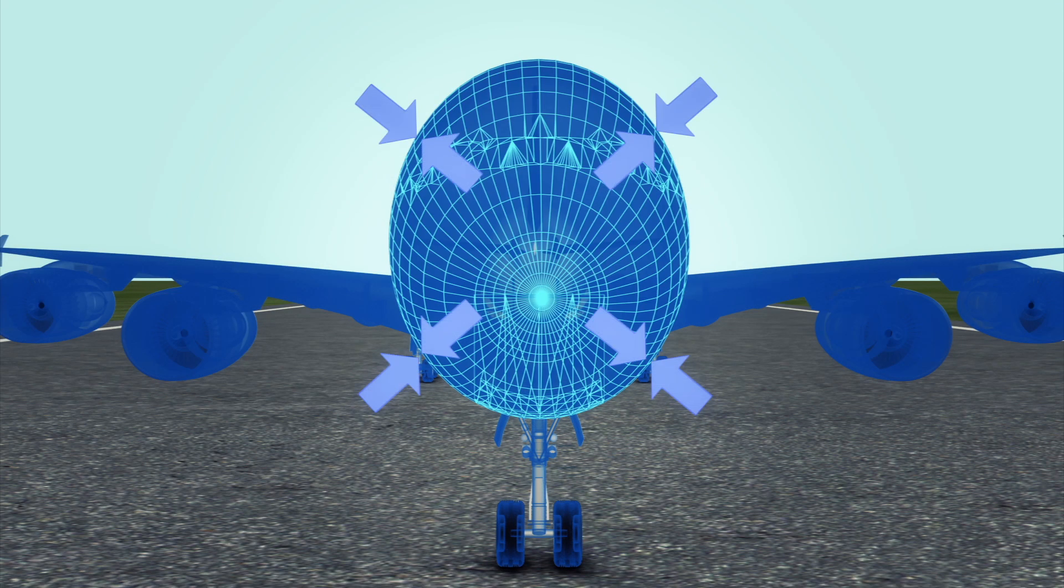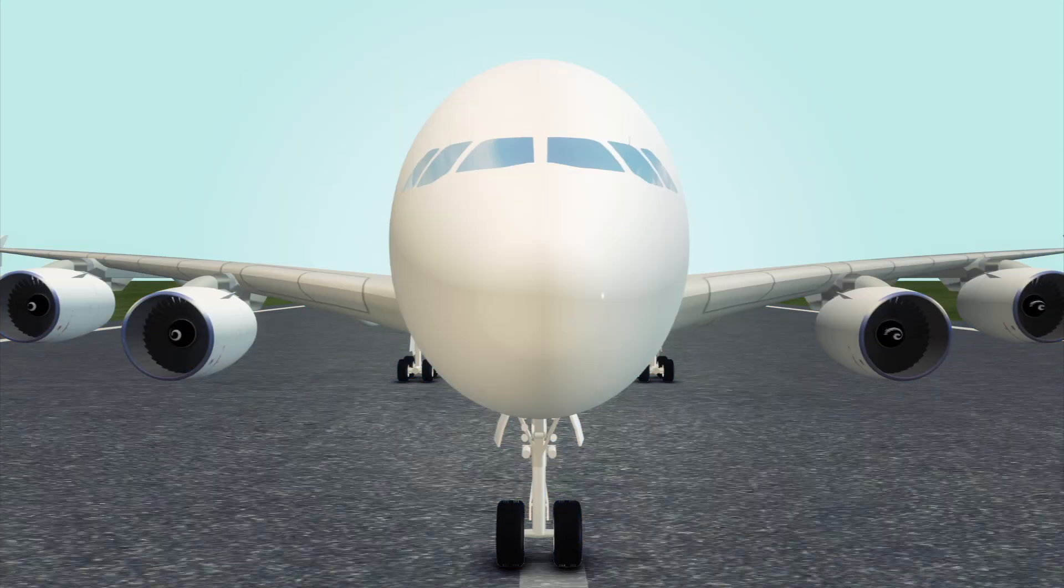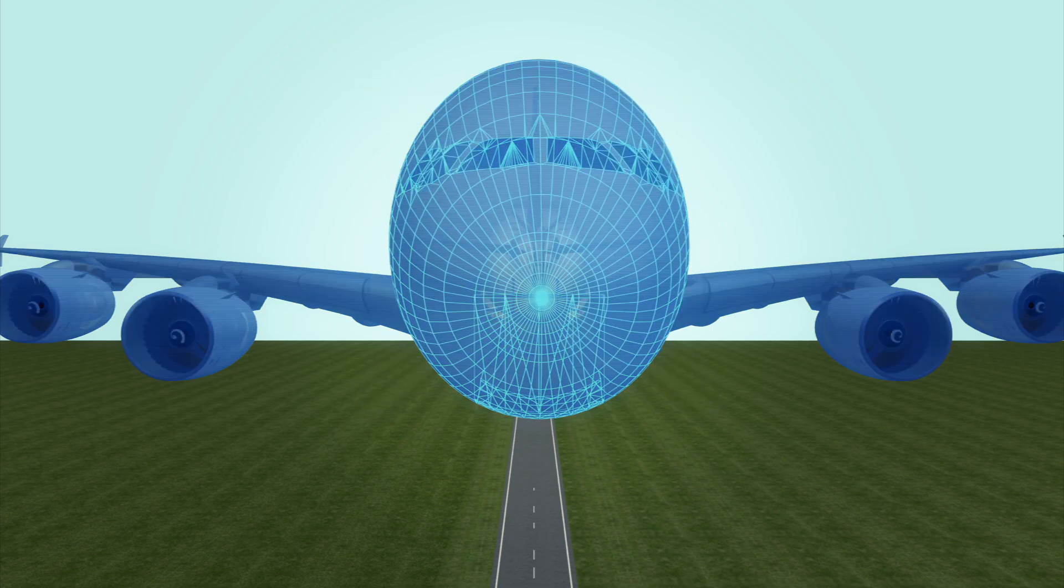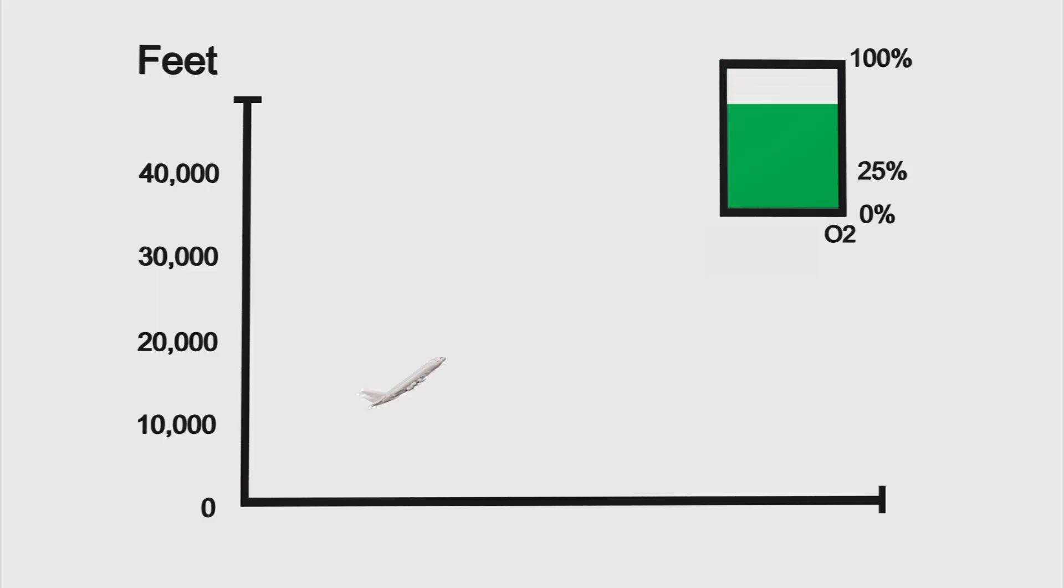At ground level, the pressure is equal inside and outside the plane. But the outside air pressure drops as the plane ascends. At 35,000 feet, the oxygen available is only one-quarter that of sea level.